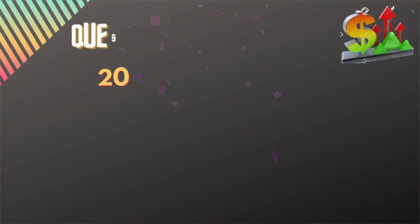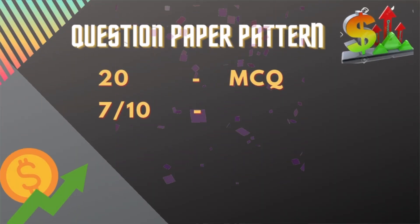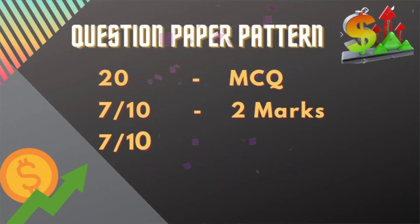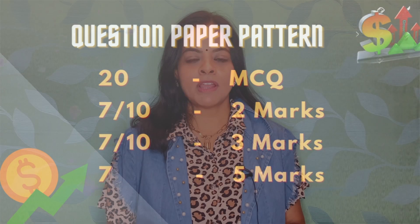From here, let us shift our attention to the question paper analysis. There are totally 20 marks allotted for MCQs, and you have 7 two-mark questions, 7 three-mark questions, and 7 five-mark questions. In the 5-mark section, there is an internal choice. Let us now analyze each component separately.